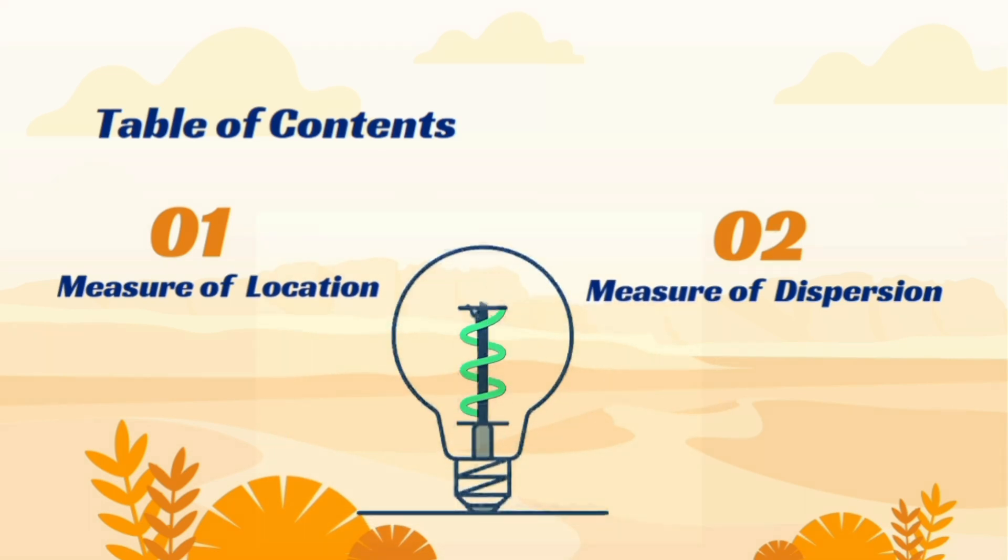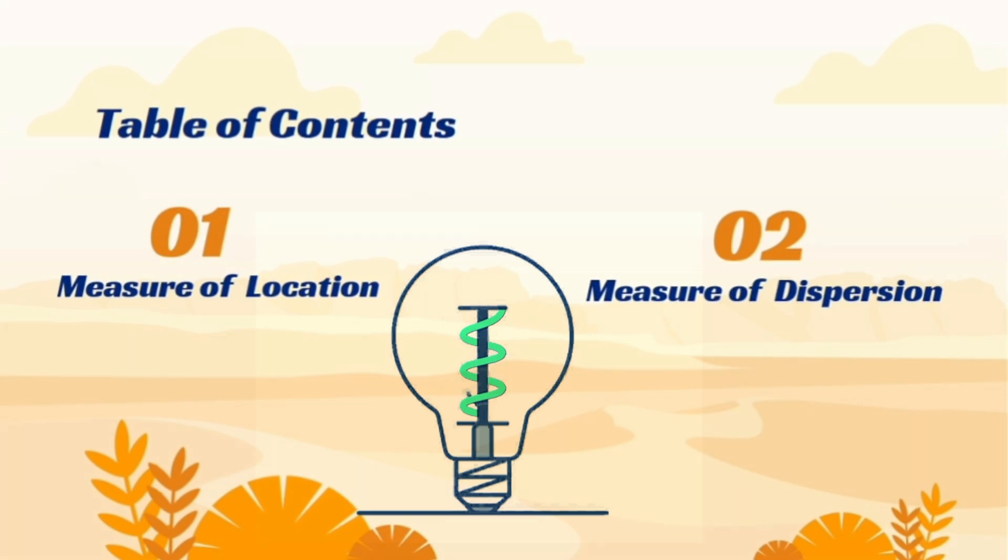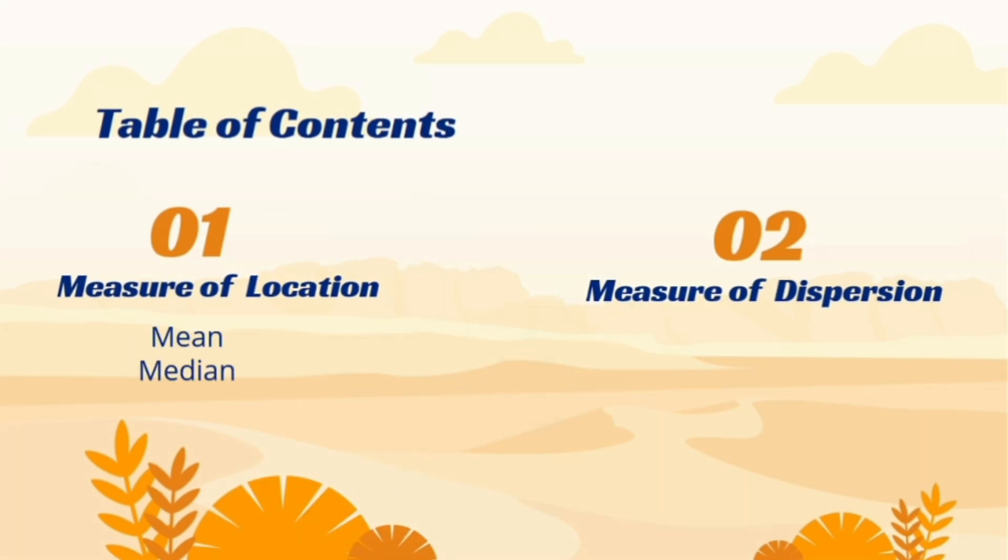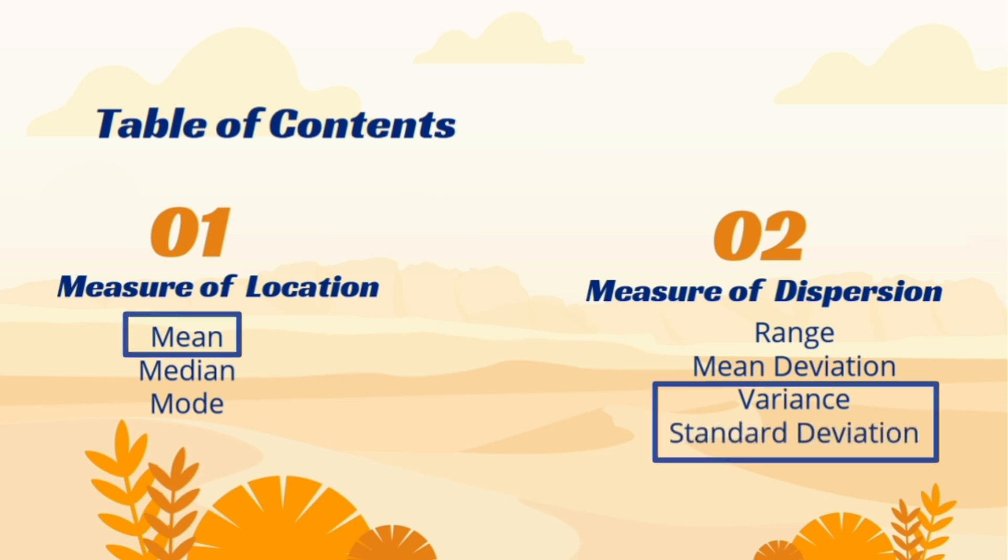There is not only one measure of location and measure of dispersion. In fact, there are many. But in this video, our focus on those measures which we use mostly in practical life. The other measures will be covered in the next video.